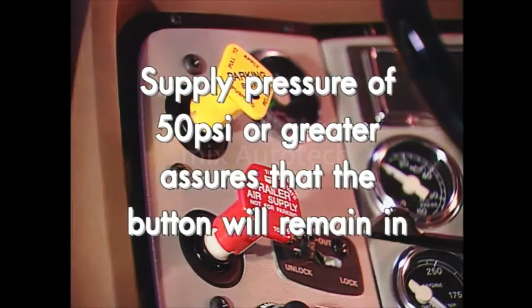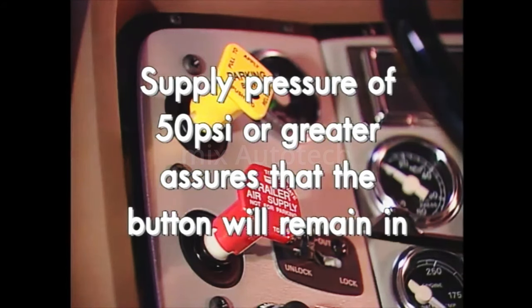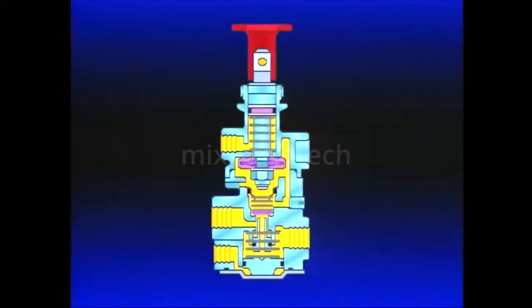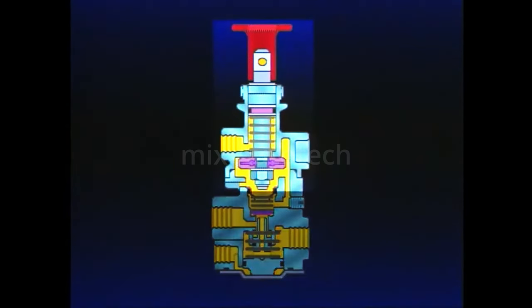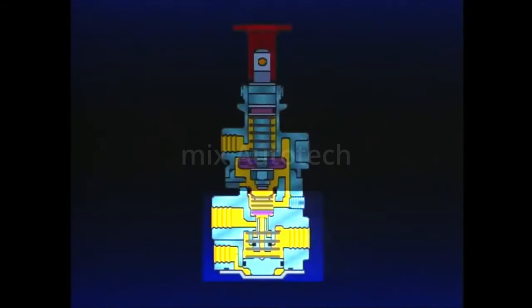Supply pressure of 50 PSI or greater assures that the button will remain in until manually pulled or supply pressure drops below 40 PSI. The PP7 is a combination of two pressure-sensitive on-off control valves in one body. The upper portion is almost identical to the PP1 push-pull control we studied in Part 3 of this series, while the lower half contains an SV1 synchro valve.